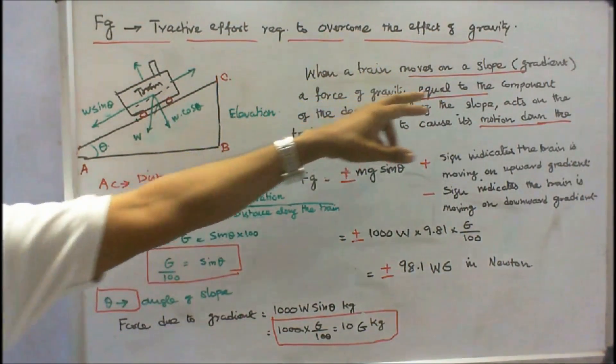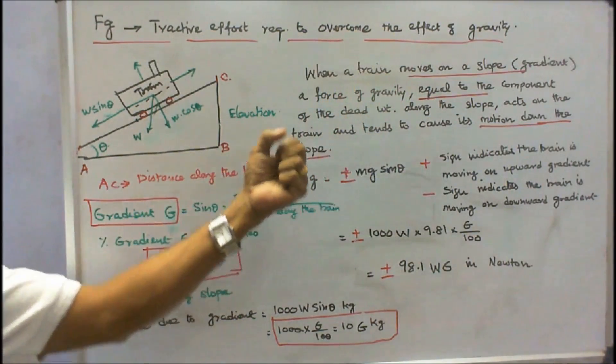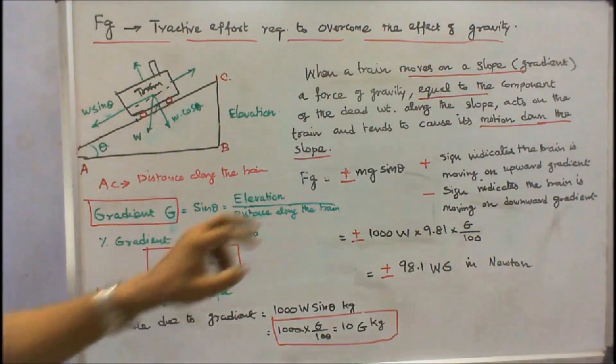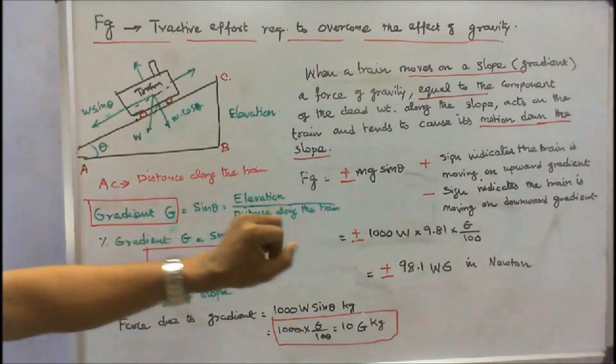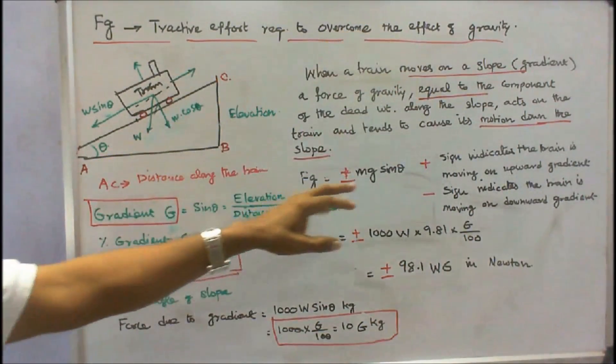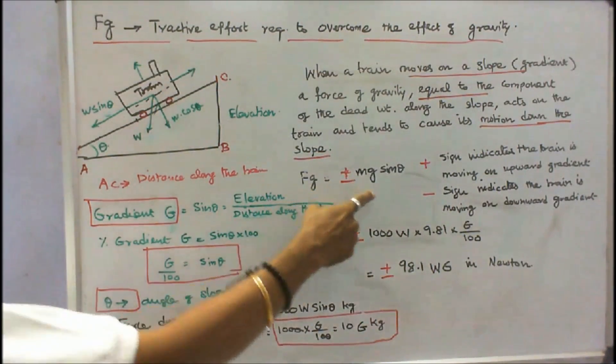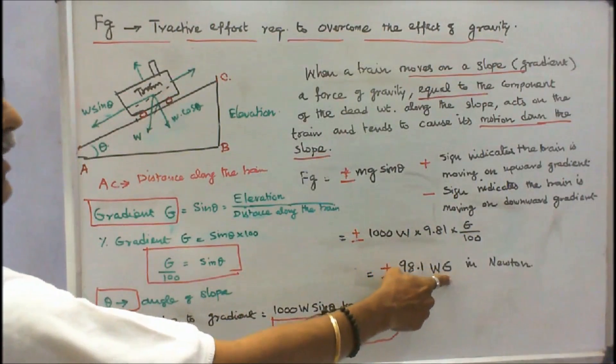When the train moves on a slope, that is a gradient, a force of gravity equal to the component of the dead weight along the slope acts on the train and tends to cause its motion down the slope. This is FG, that is W into sin theta. Here force due to gradient is equal to W into sin theta, that is 1000 into W into sin theta in kg. Here MG is equal to plus or minus M into G into sin theta, where M is the mass, G is the gravitational constant. The plus sign indicates the train is moving on upward gradient, minus sign indicates the train is moving on downward gradient. We know sin theta equals G by 100 and M equals 1000 into W, G equals 9.81. Therefore FG is equal to plus or minus 98.1 into W into G in newton.